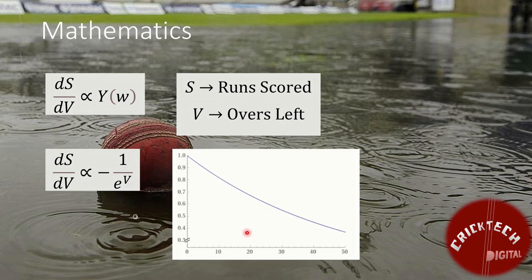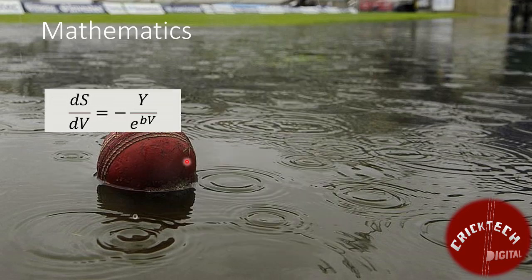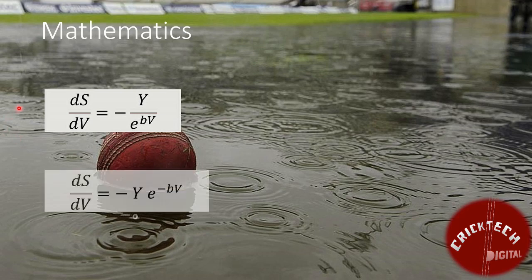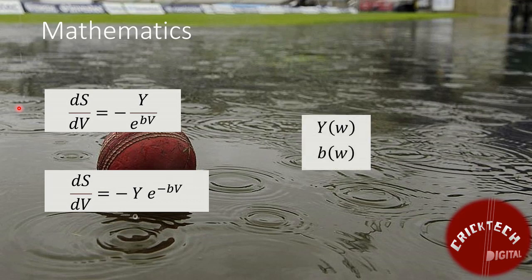From the graph, we can see that scoring rate is higher when we have less overs left. The combined differential equation comes out to be dS/dV is equal to negative Y times exponential of minus BV. Note that Y and B both here are only functions of wickets left.